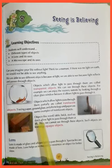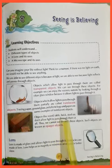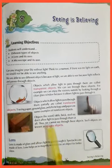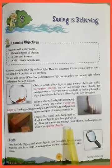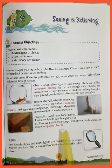Objects like wood, table, brick, steel, etc. do not allow light to pass through them at all. Thus, we cannot see through these objects. Such objects are known as opaque objects.